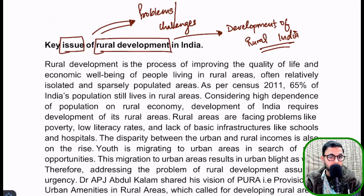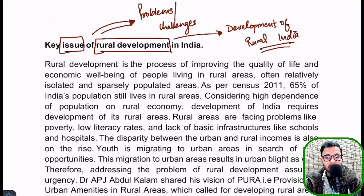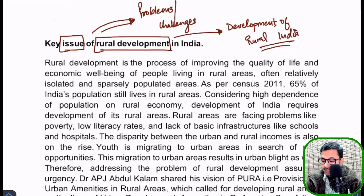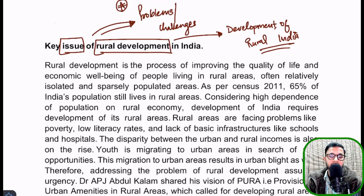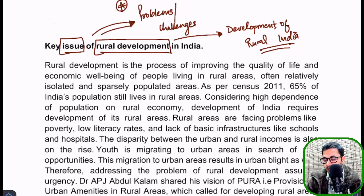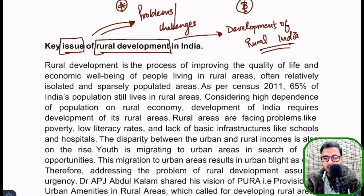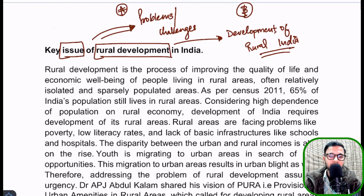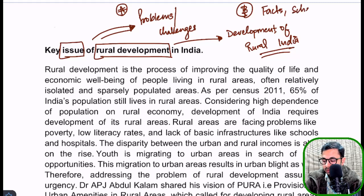Before writing, the first task — Task A — is always to identify the keywords. Here the keywords are: rural development, issues, problems, and challenges. You must be clear about what you are to write upon. The second task — Task B — is to identify and jot down all the facts, schemes, and reports you can gather around rural development.